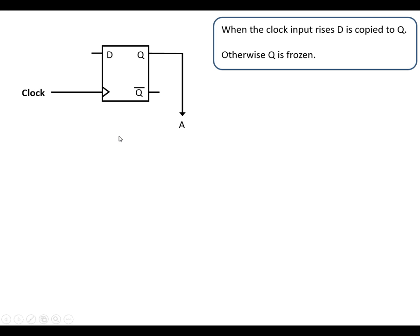Now to make this into the one bit counter what we need to do is connect Q bar to D and we're going to put an inverter on the clock input there. So what this means is that when the clock input falls D is going to be copied to Q. And what's going to happen also is that Q is going to change the state in that case.